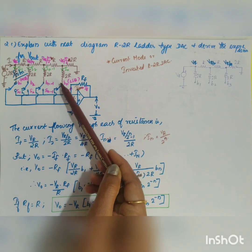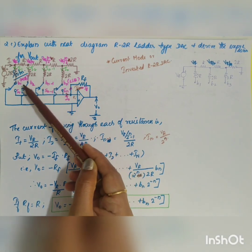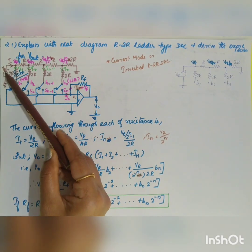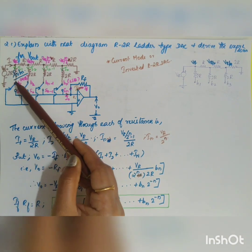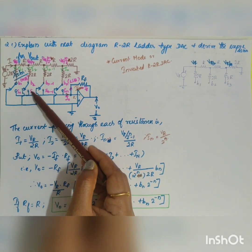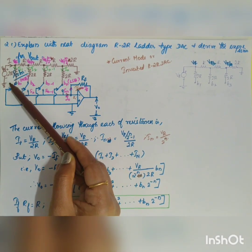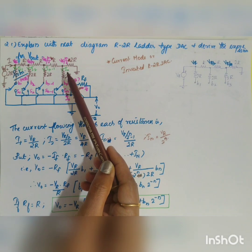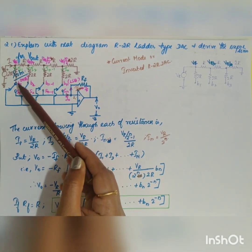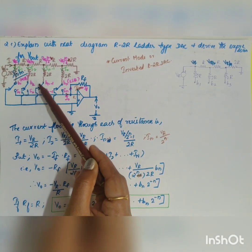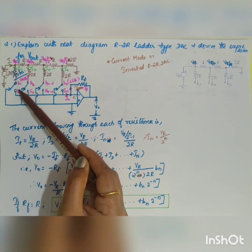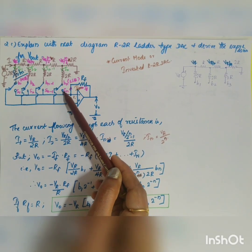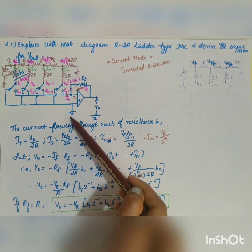Here B1, B2, B(N-1), up till BN are your binary bits. B1 is taken as your MSB and BN is your LSB, and VR is your reference voltage. The inverting terminal is connected to switches — the binary bits can be connected to either ground or high. For example, if B1 is equal to 1, it will be connected to VR; all others will be connected to ground. That's why you have switch connections S1, S2, S(N-1) up till SN, and your non-inverting terminal is grounded.